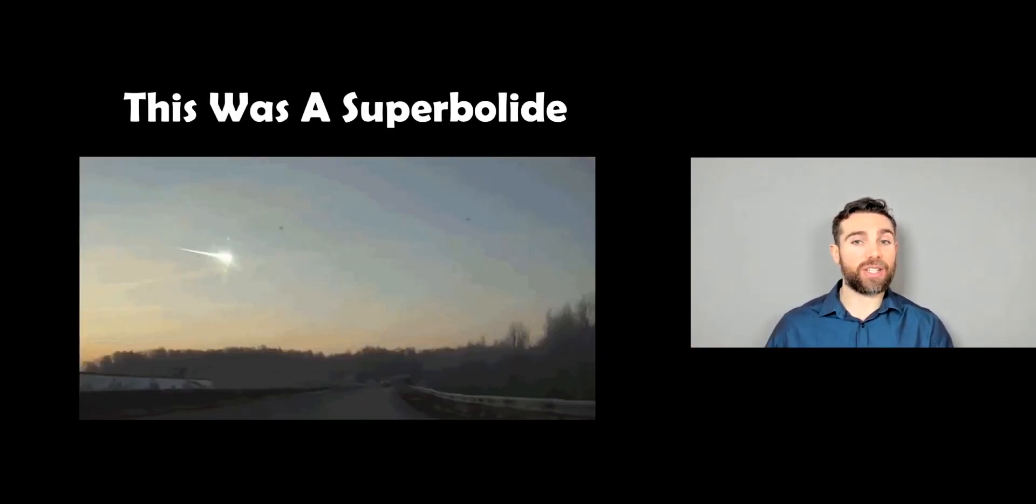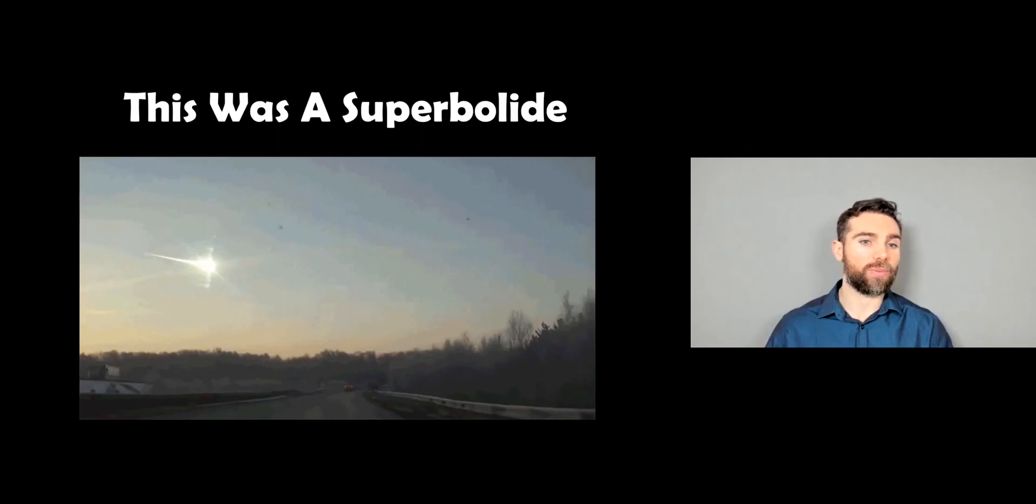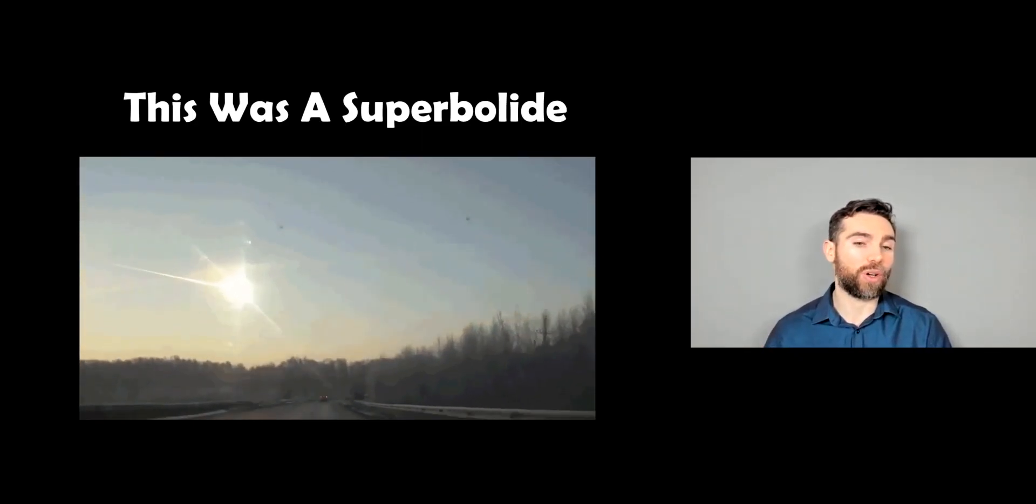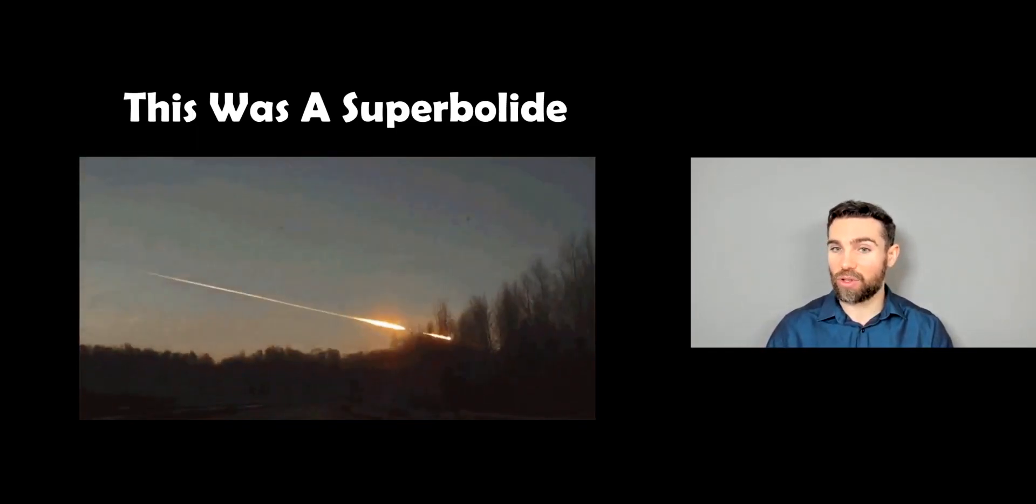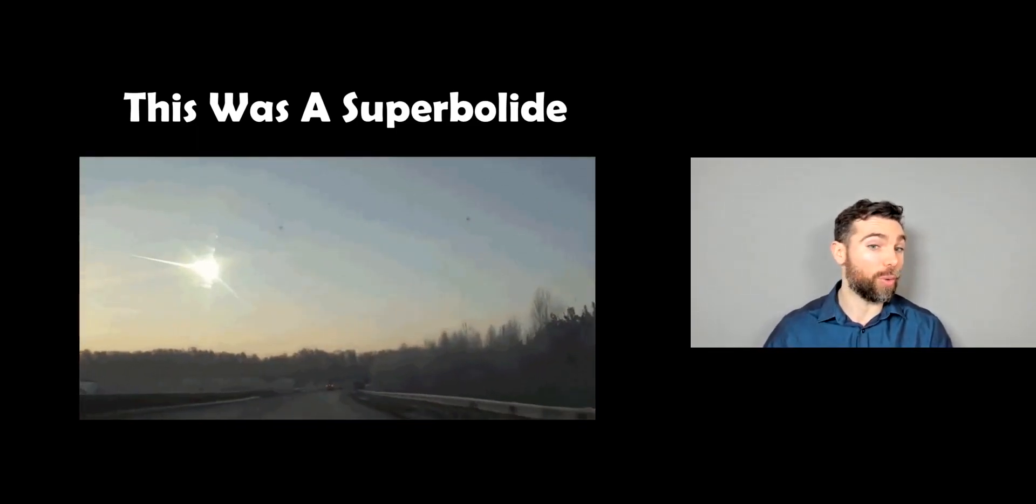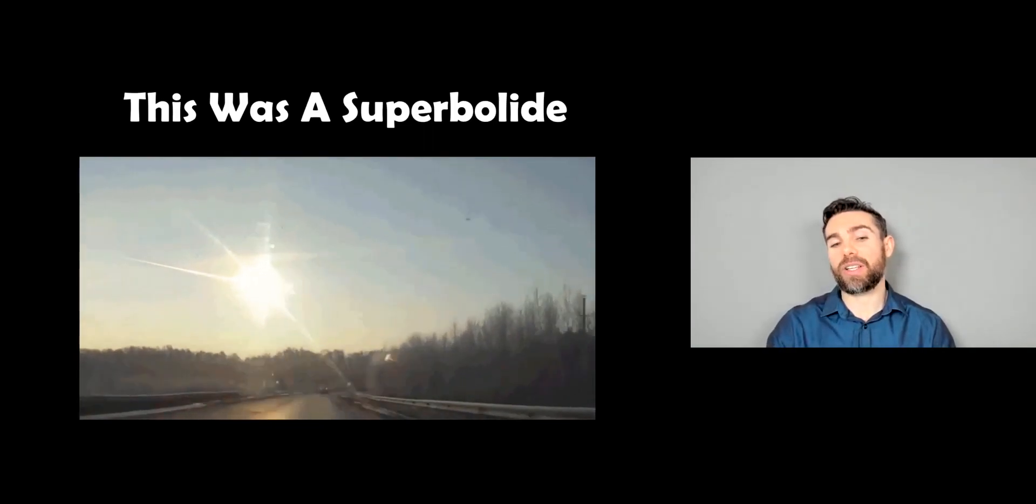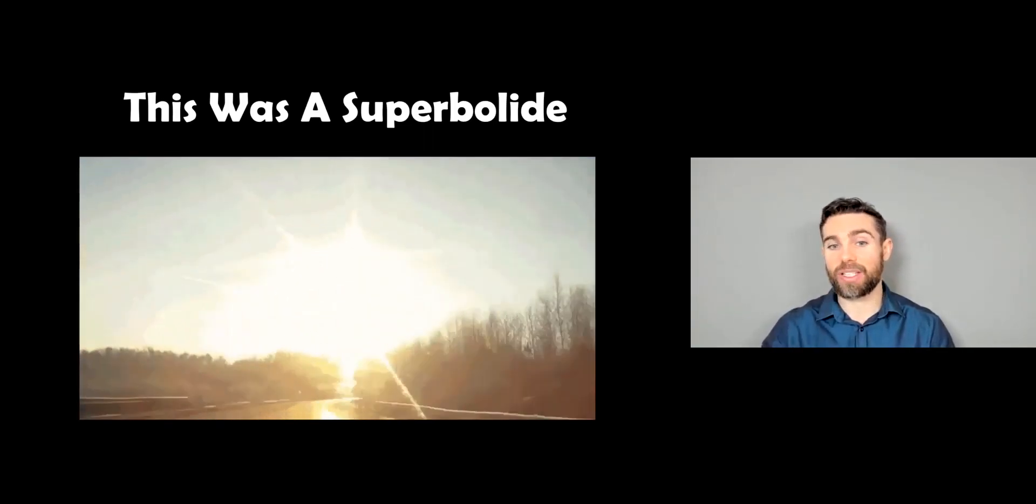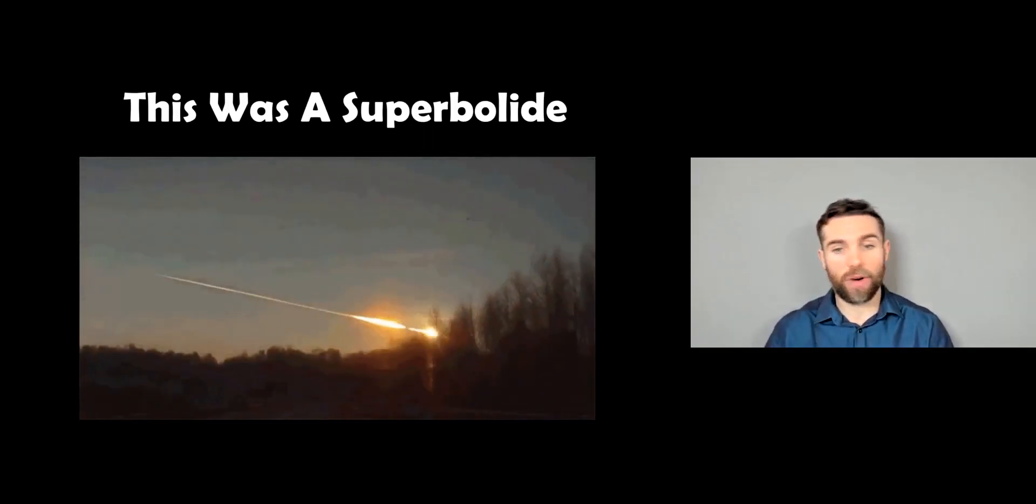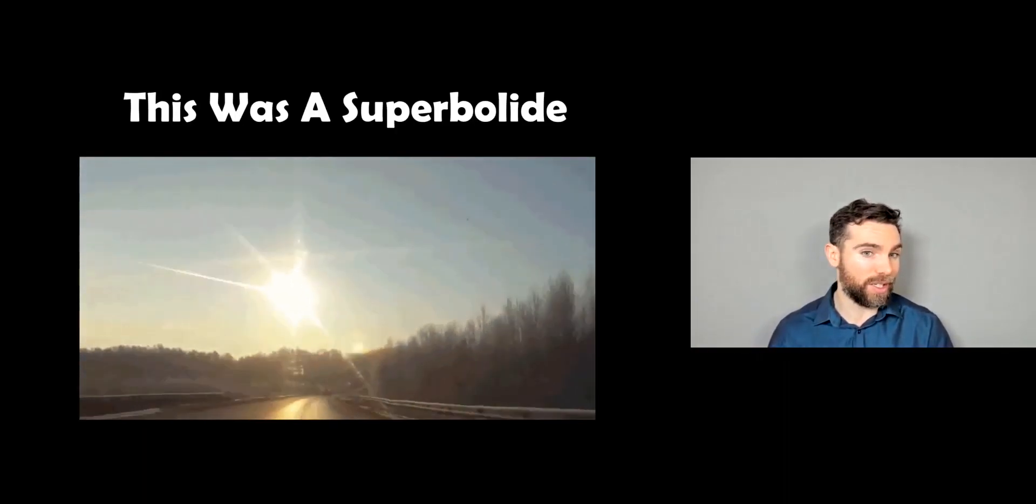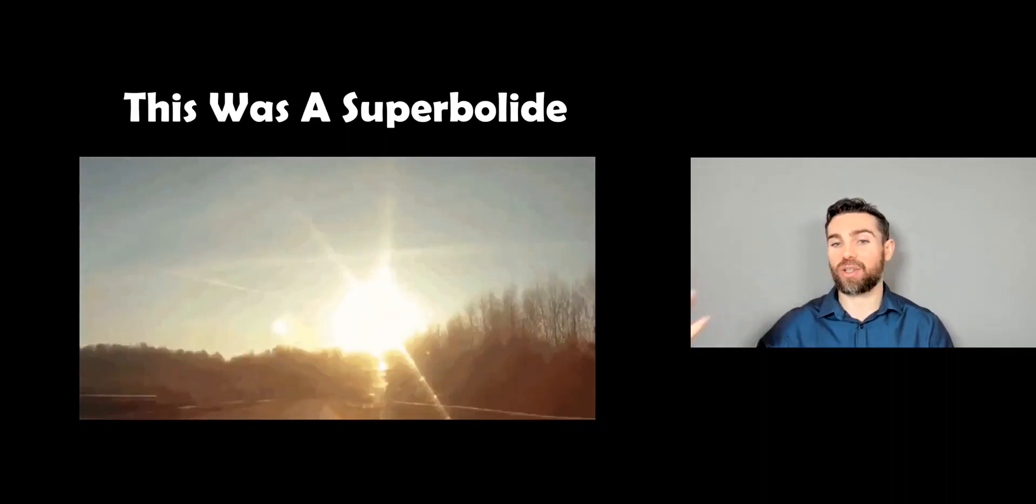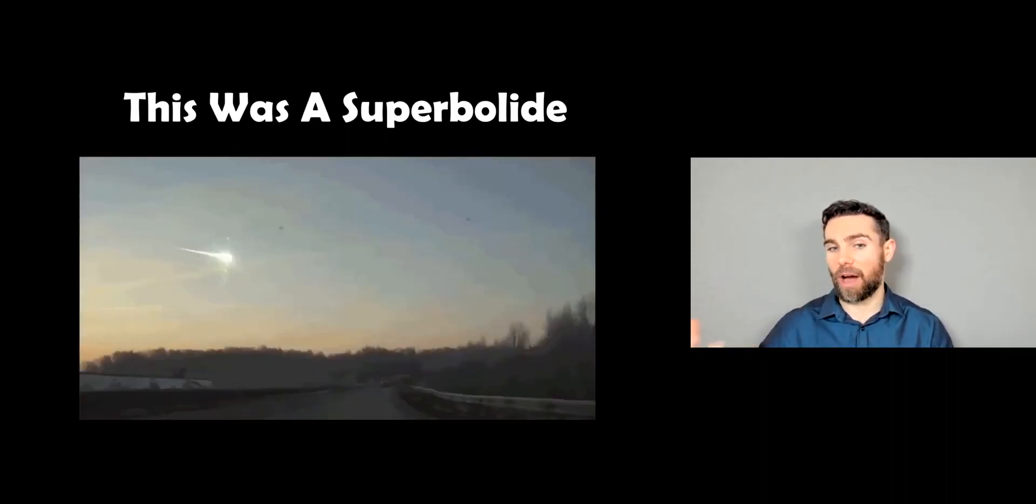Now this was a superbolide. You're probably quite familiar with this one. This one occurred over Russia a number of years ago and it was very bright. It was a superbolide, so it's even brighter than a normal bolide. You can see that it's very bright, but also you can see it for a long period of time. It's not a brief streak across the sky, it's quite a significant time frame that you can see it. And also it gets suddenly brighter. That's another characteristic of a bolide or superbolide.